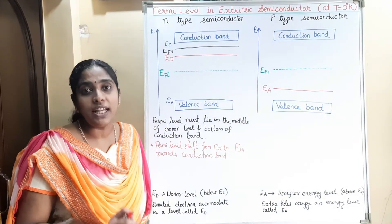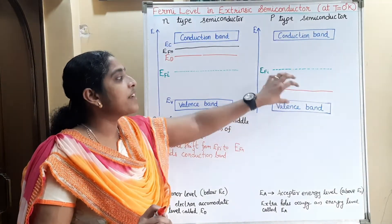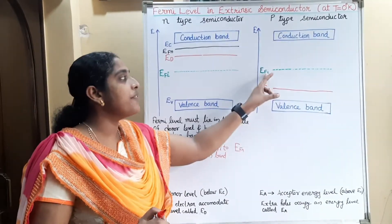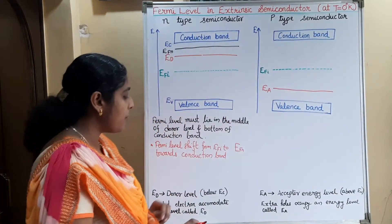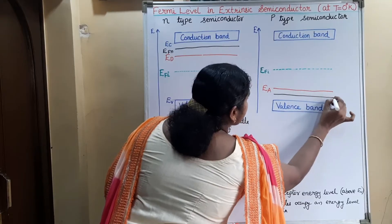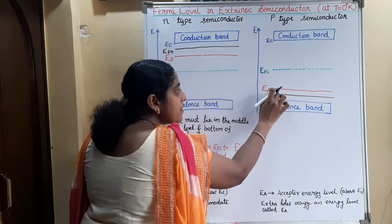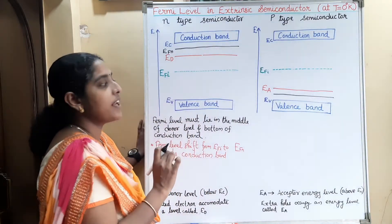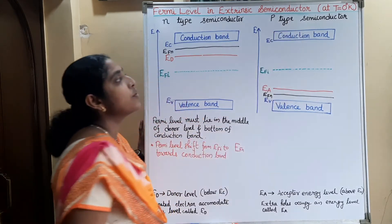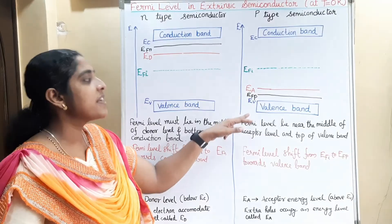Now where will be the position of the Fermi level in p-type semiconductor? The extra holes are near to the valence band, so the average energy will shift downwards. The Fermi level EFI will shift downwards, and at T equal to 0 Kelvin, the Fermi level in p-type semiconductor will be almost in the middle of the valence band and the acceptor level. So exactly it will be in the middle of the acceptor energy level and valence energy at T equal to 0 Kelvin, meaning EFI shifts downwards towards the valence band.